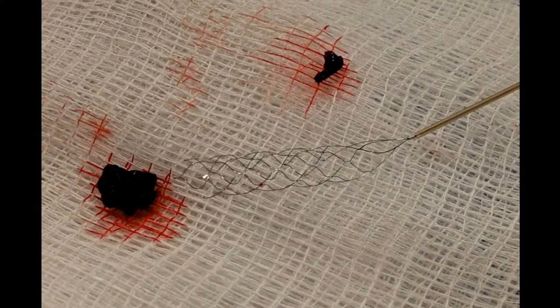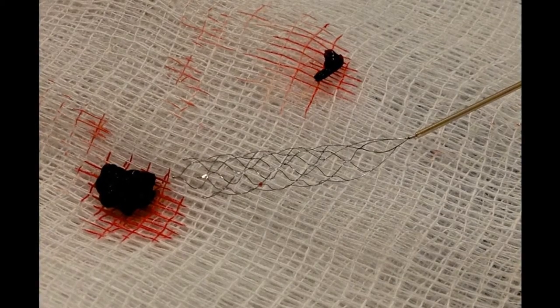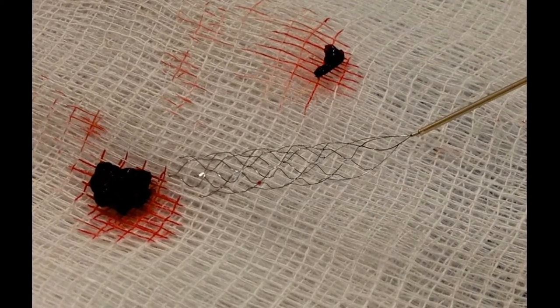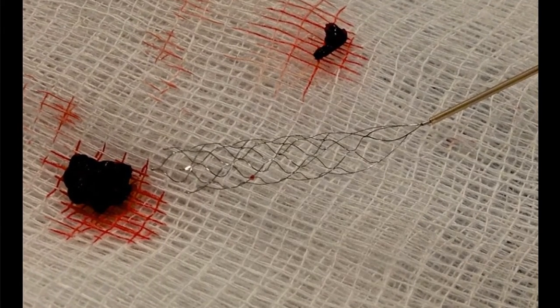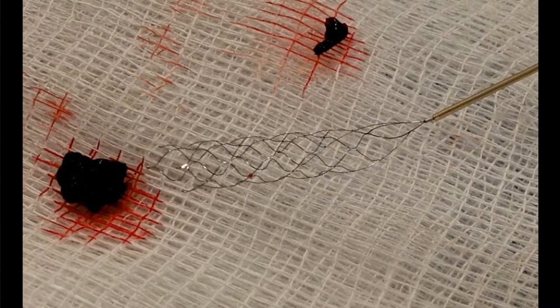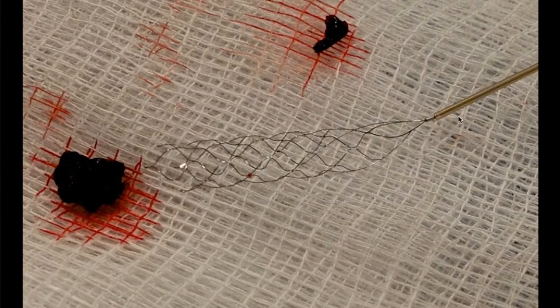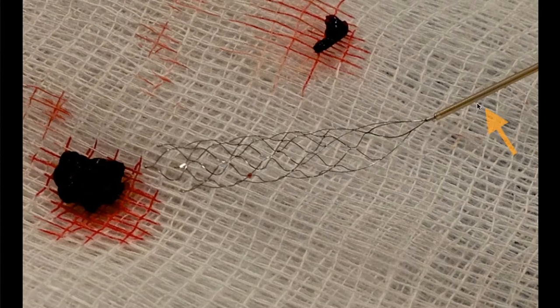So the interventional neuroradiologist deployed the endovascular stroke treatment device, the retrievable stent, and pulled the clot out of the patient's brain artery. Here's what the stent as well as the blood clot look like outside of the patient's body. So let's go over what we're looking at here. Here's the micro catheter. Here is the stent, the retrievable stent. And here's the blood clot that was blocking this patient's brain artery.